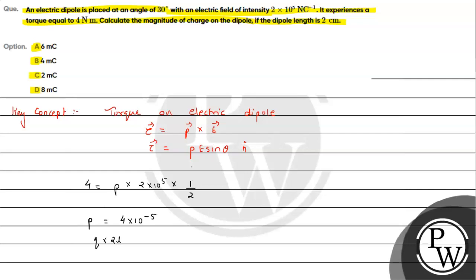The dipole moment P equals charge times dipole length. The length given is 2 centimeter, which is 2×10⁻² meters. Substituting, the magnitude of charge comes out to be 2×10⁻³, which is 2 millicoulomb. So the correct answer is option C. I hope you understood the solution — all the best!